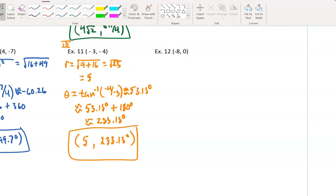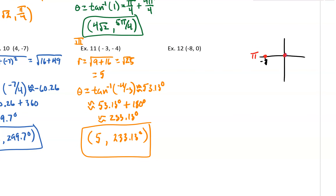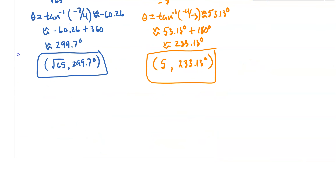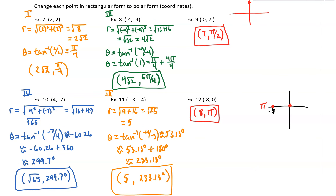The last one: (-8, 0). The point lies on the negative x-axis. r = 8 (distance from origin) and θ = π. So the answer is simply (8, π) — no additional work needed. Hopefully this makes sense in terms of conversions. We'll talk more about conversions as we move forward. Have a good one!